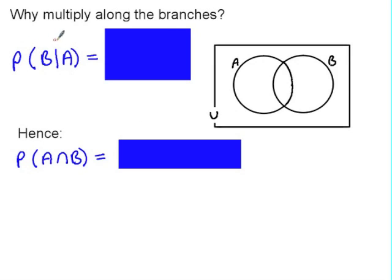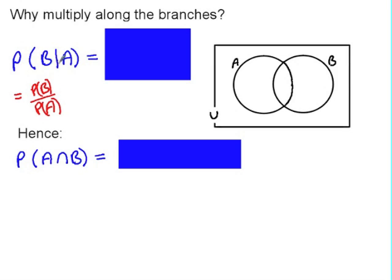I wonder if you've thought about why we multiply along the branches of a tree diagram. We're going to use a Venn diagram to help with this. We've got two events, event A and event B. The middle section is when A and B both occur, and the outside is when neither occurs. A common error is to think that the probability of B given A is the probability of B over the probability of A — it does look a bit like a fraction given that symbol.